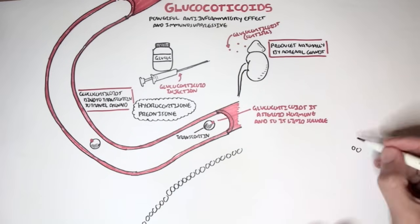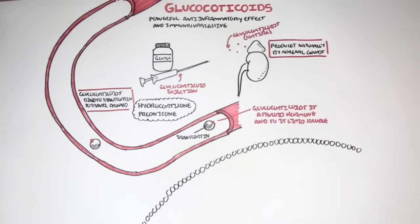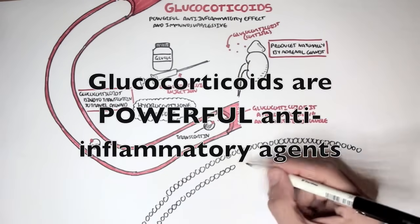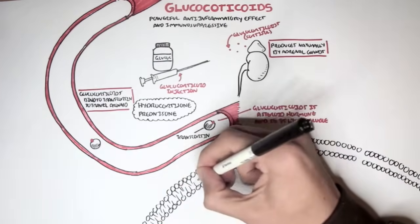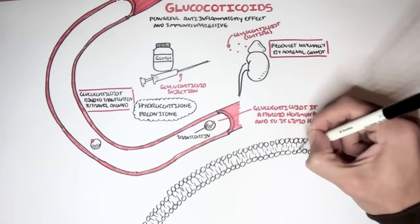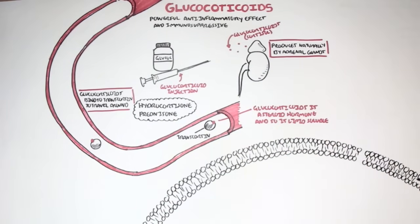Now, let us see some effects glucocorticoids have in our body. Remember, they are powerful anti-inflammatory drugs and also they are immunosuppressive. So it would revolve around these two things. One of the main things glucocorticoids do is that they go inside a cell and bind onto a glucocorticoid receptor and up-regulate and down-regulate certain genes.